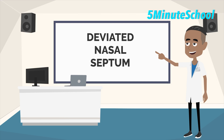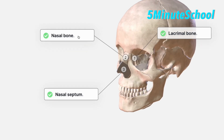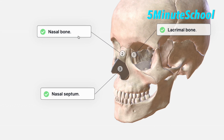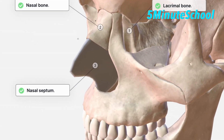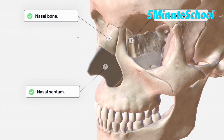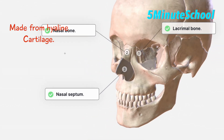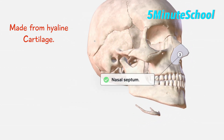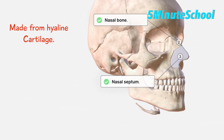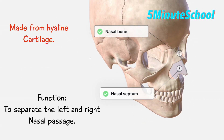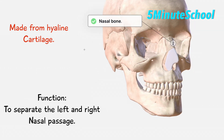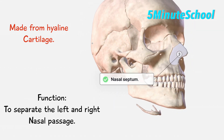In today's video we're going to be talking about a deviated nasal septum. The septal nasal cartilage is a structure in the nose made up of hyaline cartilage. It helps to separate the right and left nasal passage and also helps to keep the nasal passages narrow to allow the passage of air.